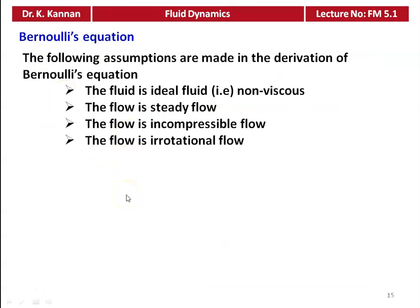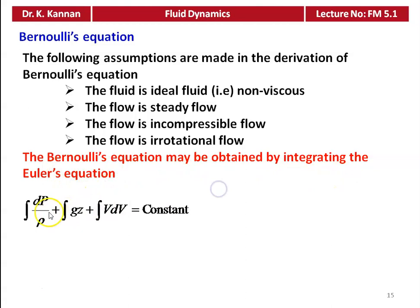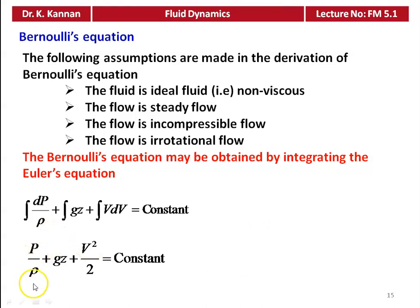The next equation is Bernoulli's equation. The assumptions made in its derivation are: the fluid is ideal (non-viscous), the flow is steady, the flow is incompressible, and the flow is irrotational. The Bernoulli's equation is obtained by integrating the Euler's equation: ∫dP/ρ + ∫g·dZ + ∫V·dV = constant, which gives P/ρ + gz + V²/2 = constant.